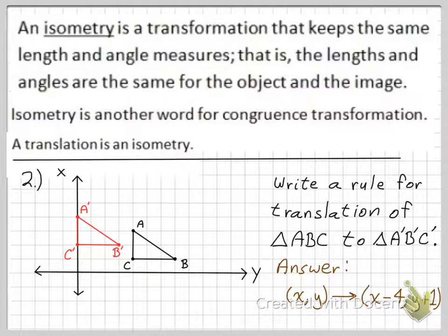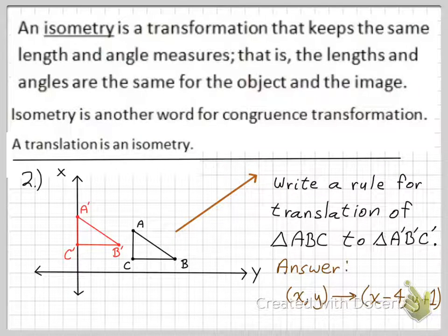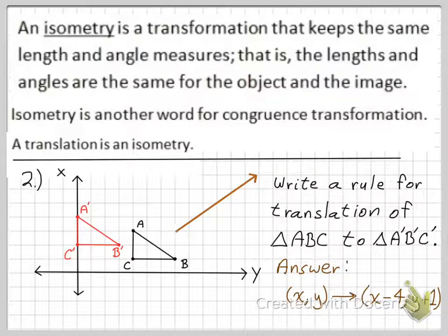There's another concept for how you can describe a translation — you can also describe it using a vector. A vector is basically just an arrow that has both direction and size. The way you express a vector is through component form, which means you take the horizontal component and the vertical component. So if this is my starting point and this is my end point, the direction goes from start to end.